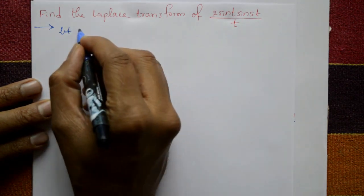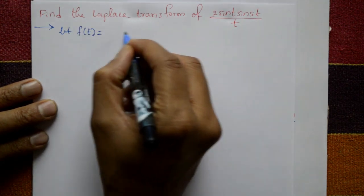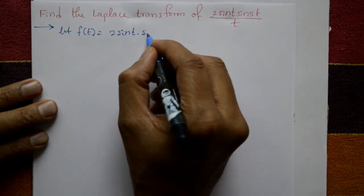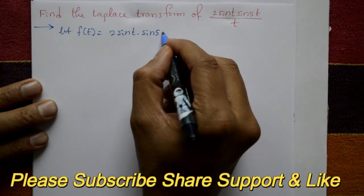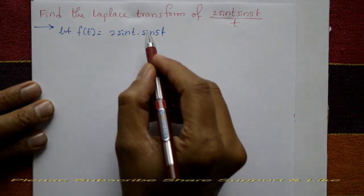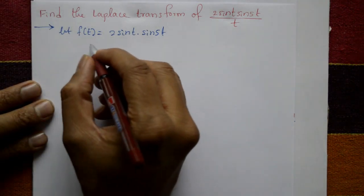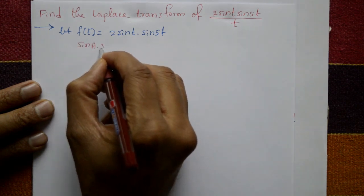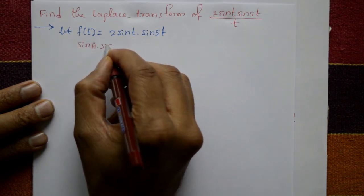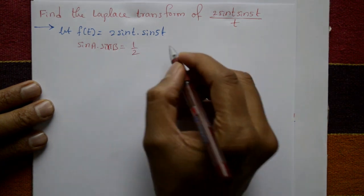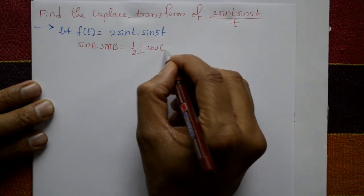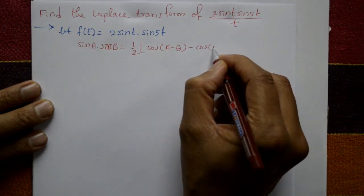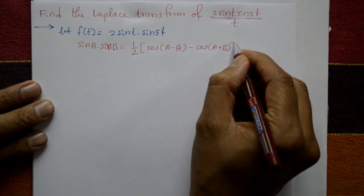Let the numerator part f(t) be equal to 2 sin(t) into sin(5t). Now use the standard formula: 2 sin(a) sin(b) is equal to cos(a minus b) minus cos(a plus b).